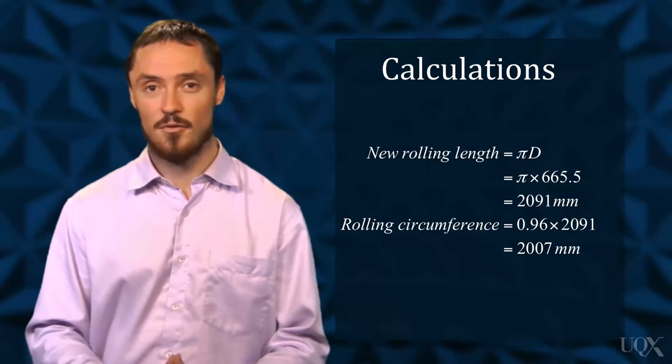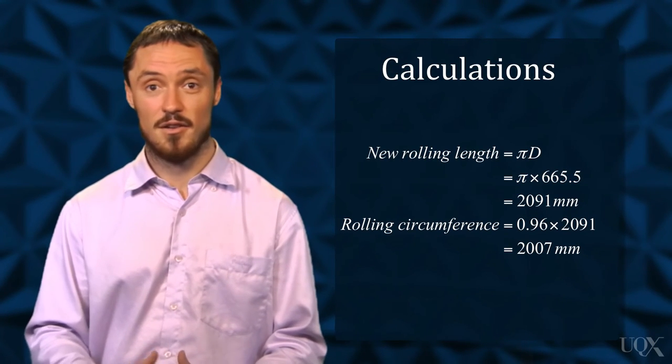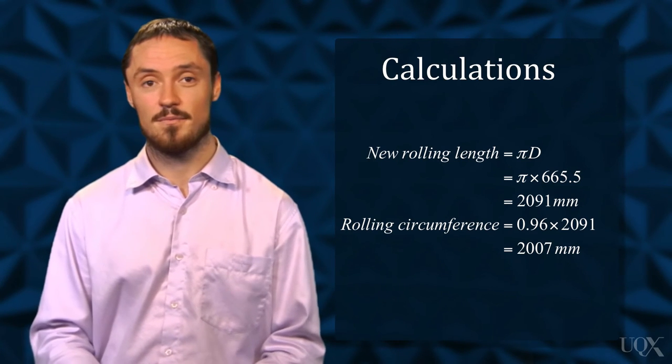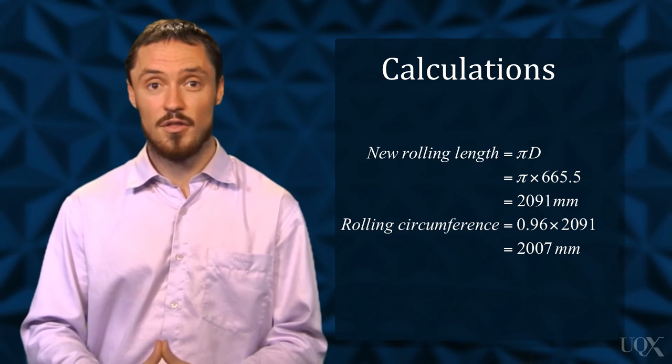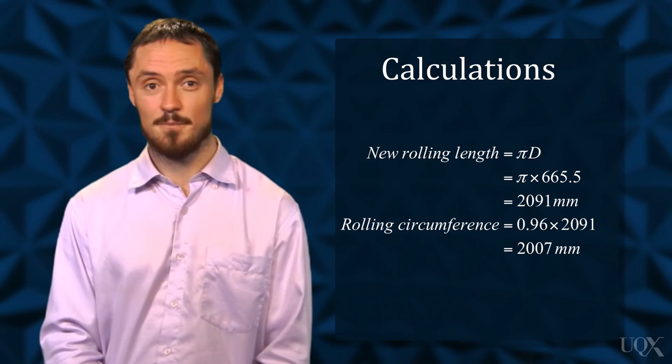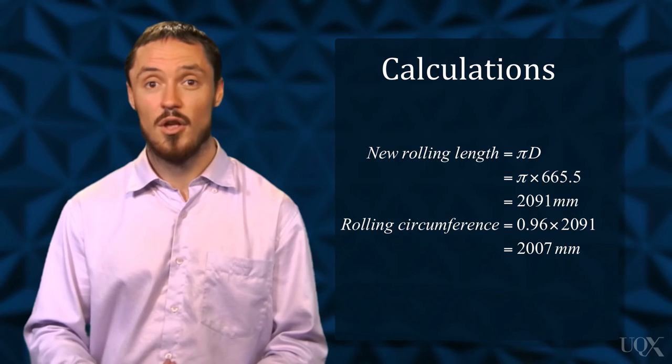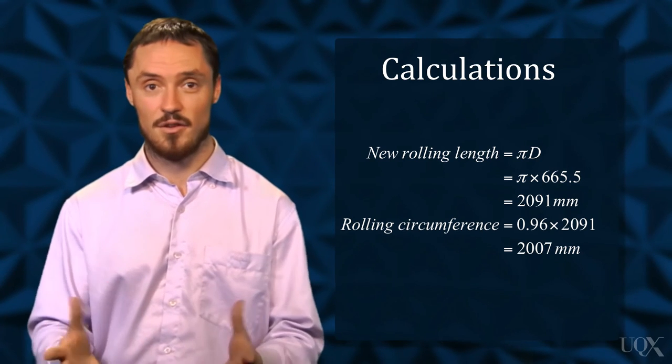The rolling circumference is 96% of 2,091, which is 2,007 millimetres. Each revolution of the tyre on average travels 2,007 millimetres. Finally, to the second part of our problem. How many rotations does the tyre take to travel 30,000 kilometres when we take tyre wear into consideration?